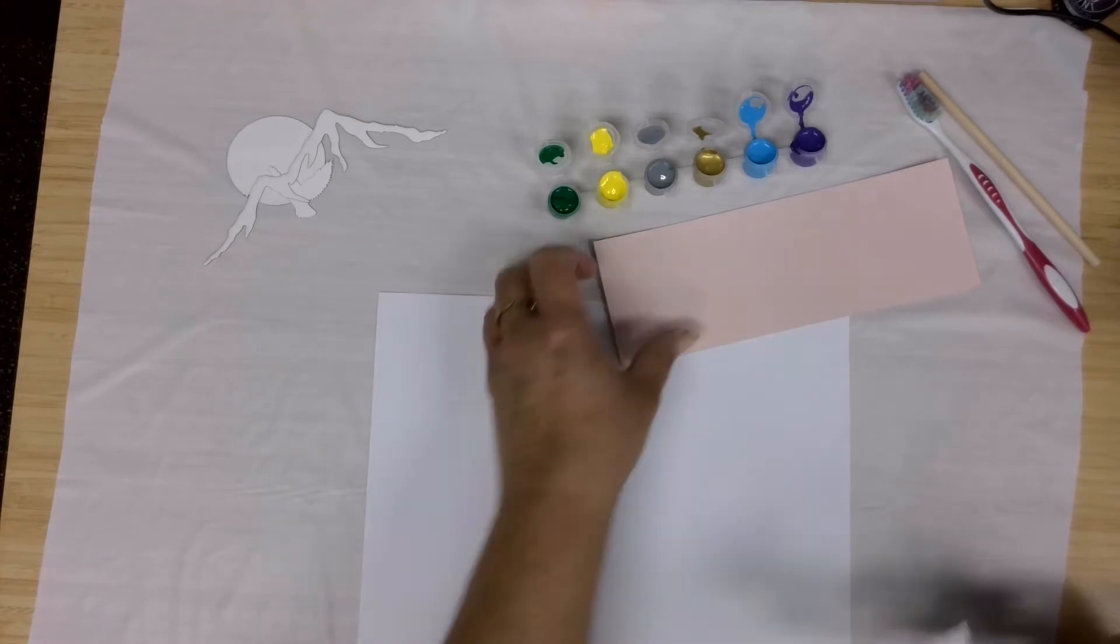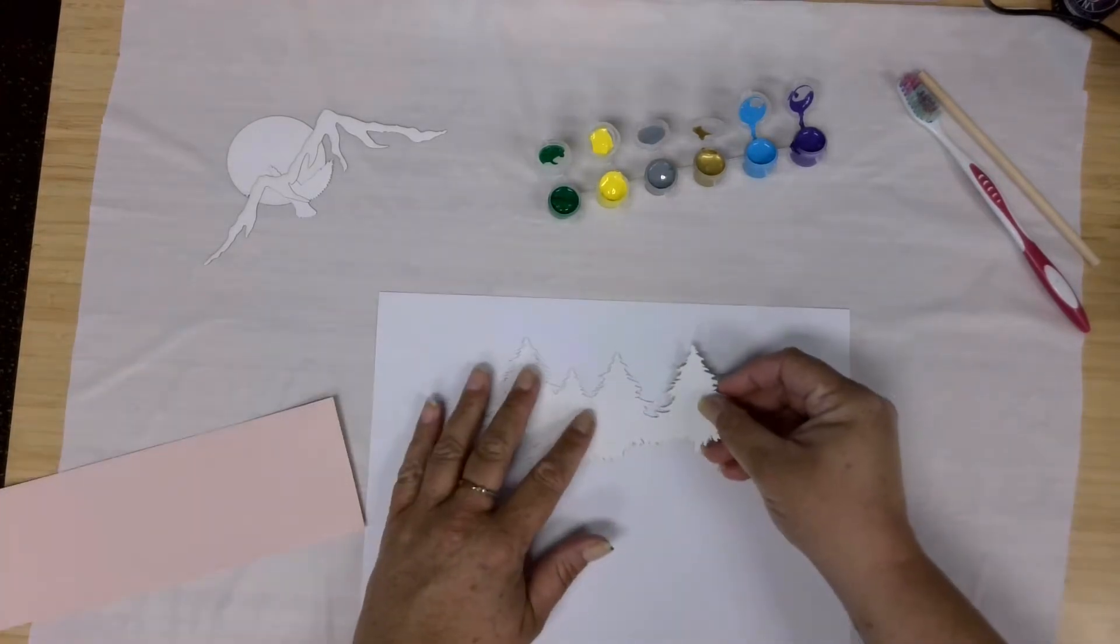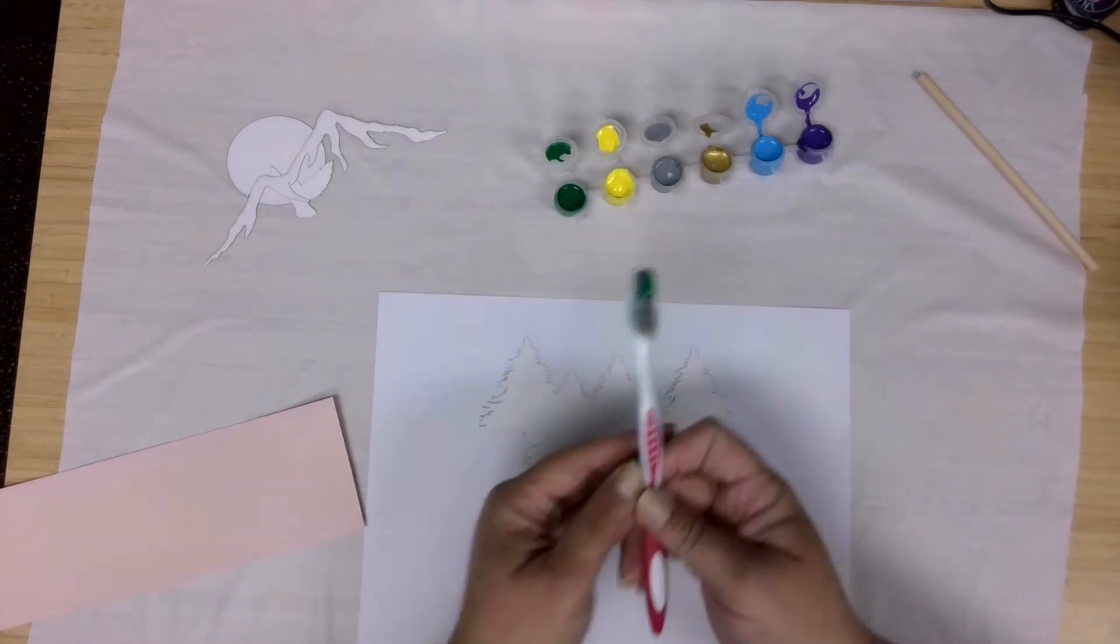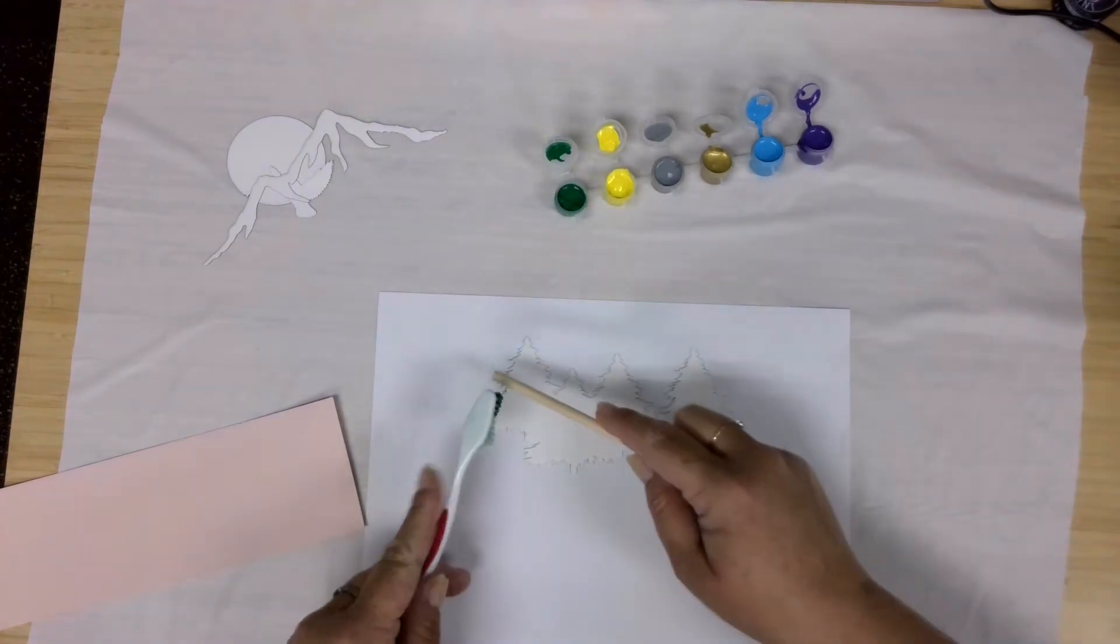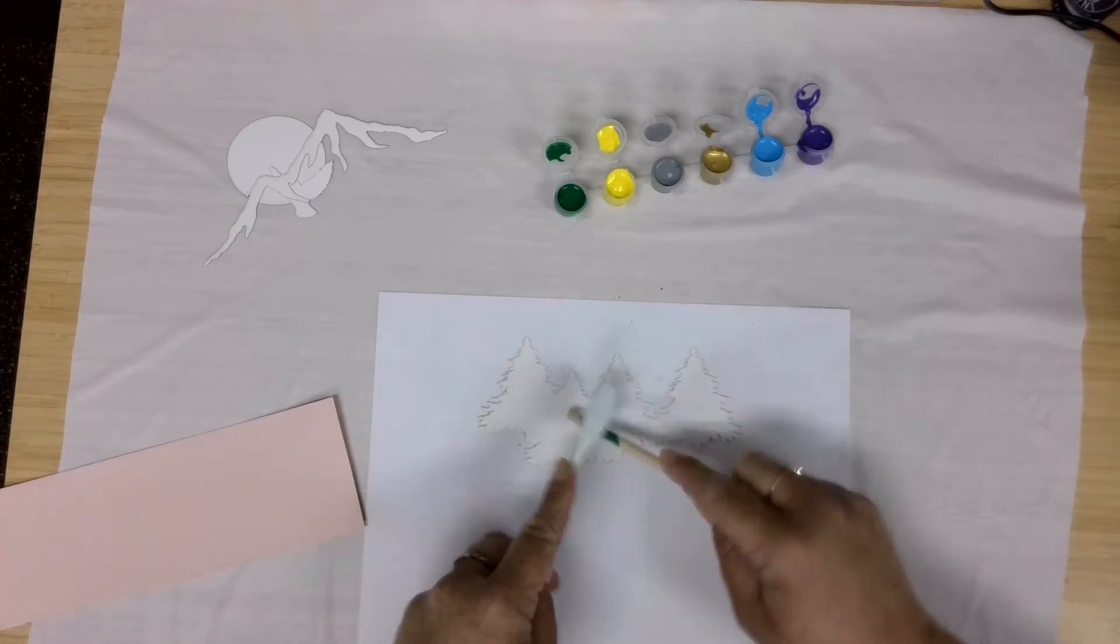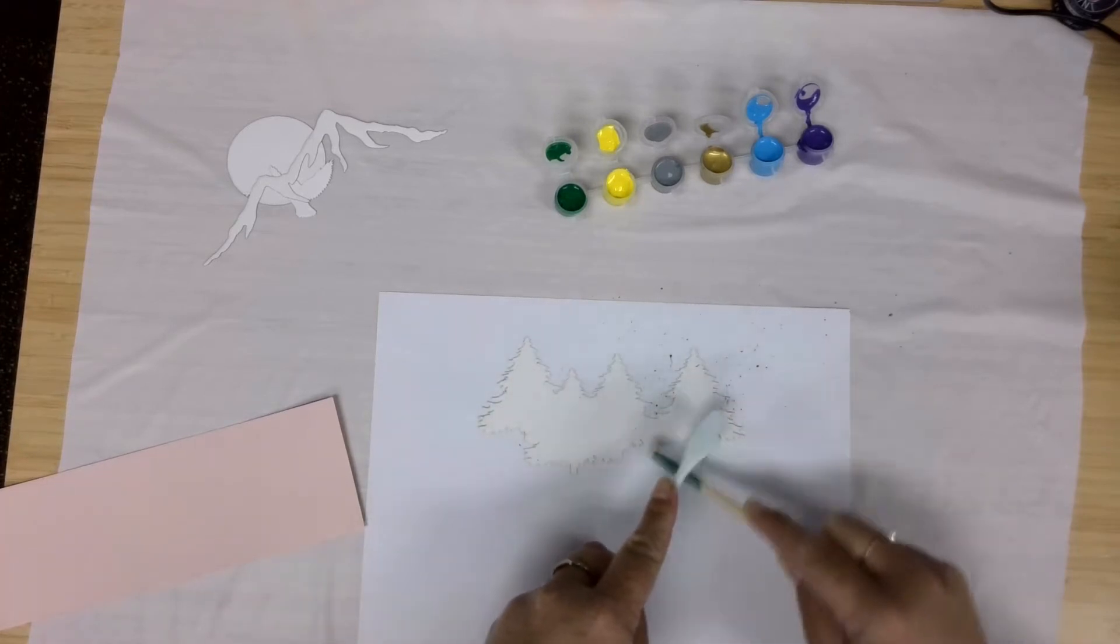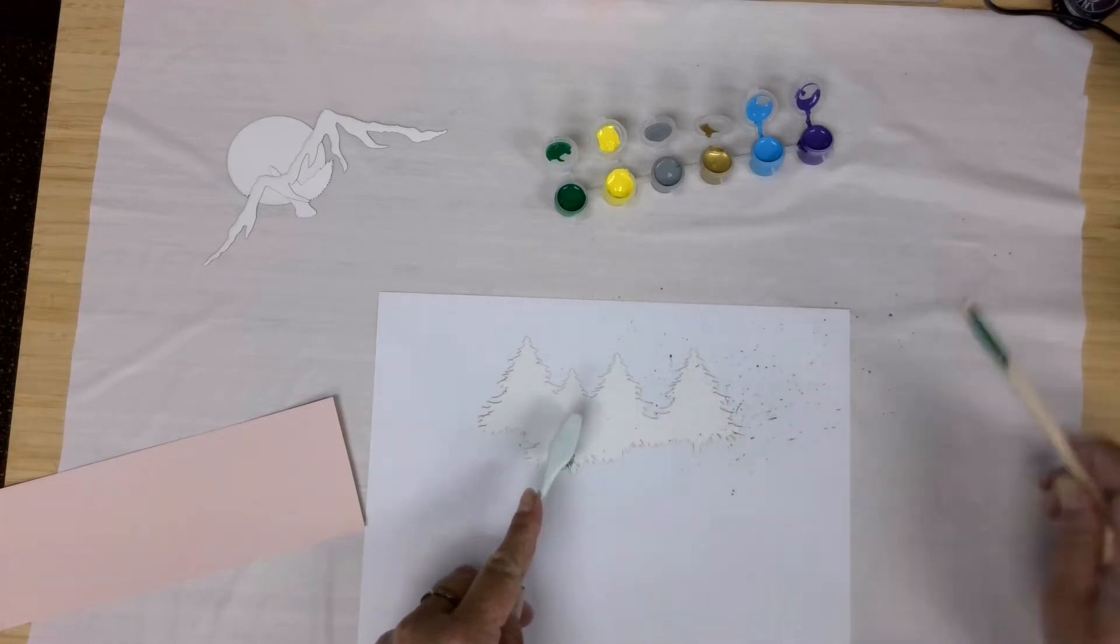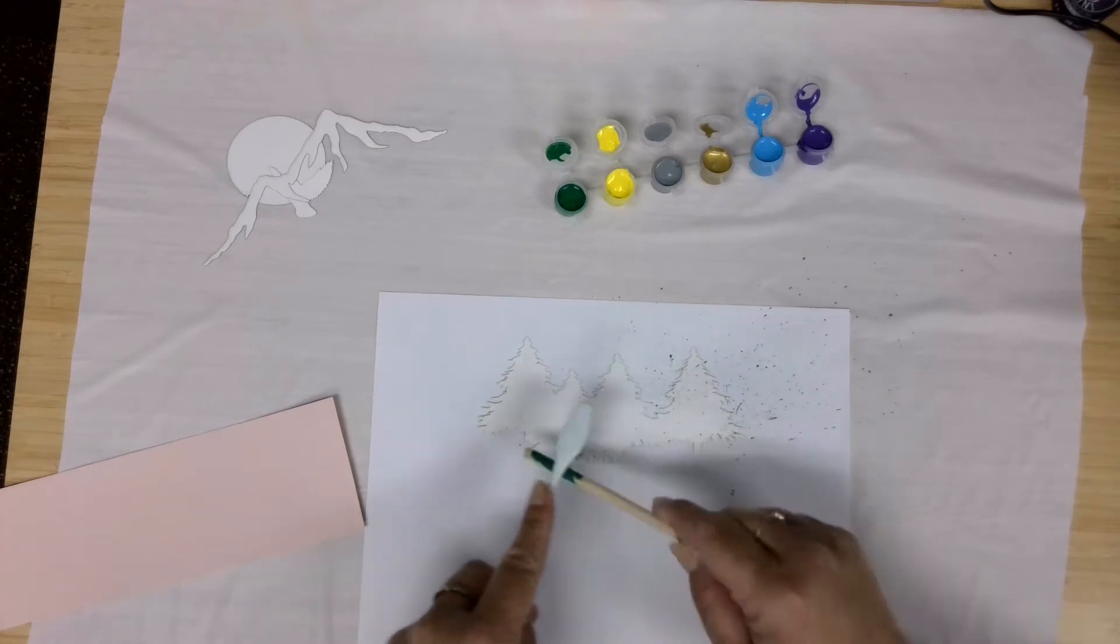So here's our paper, here's our tree, so I can just put some paint on my toothbrush there and I'm just gonna splatter.